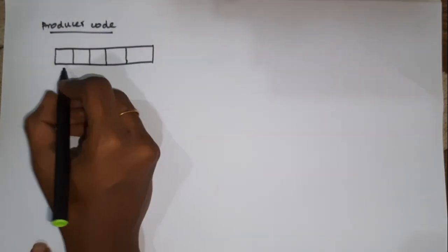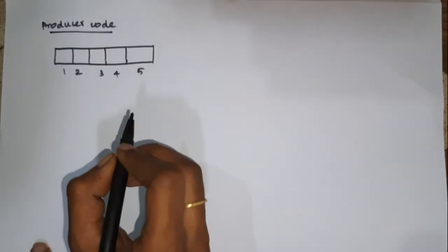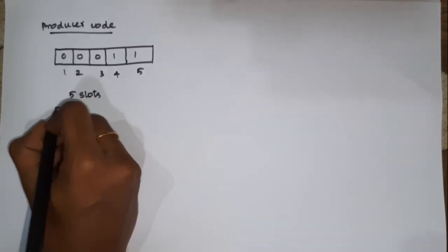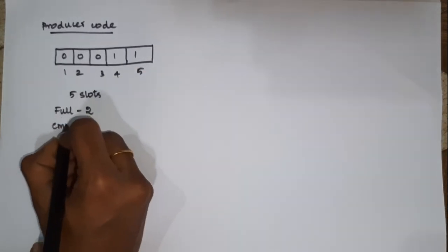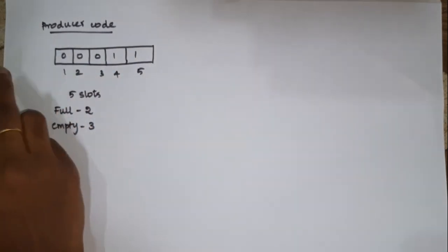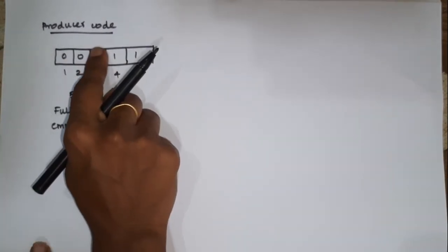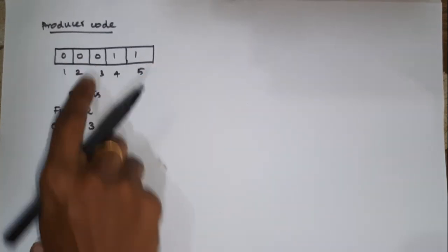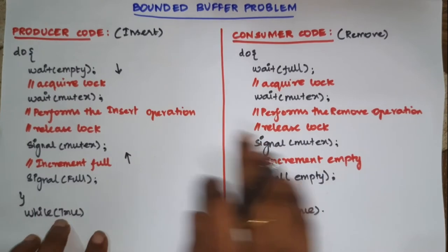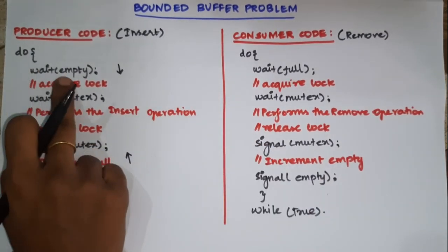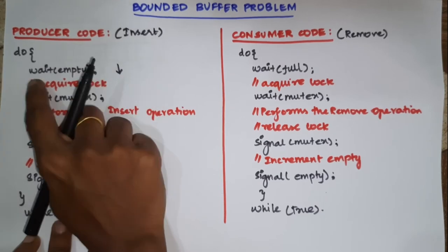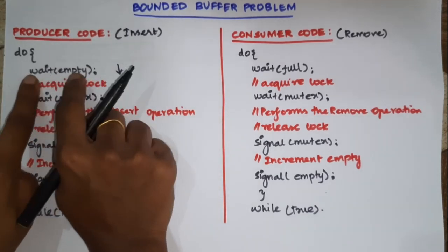Now we look at the producer. We have totally 5 slots. Here, 1 represents a filled slot and 0 represents an empty slot. So we have 2 full slots and 3 empty slots. Now the producer will insert one data. The empty slots will decrease and the full slots will increase. If I insert data, there are 3 empty slots and they become 2 empty slots. So we decrement the empty value with the help of wait — wait(empty) decrements.